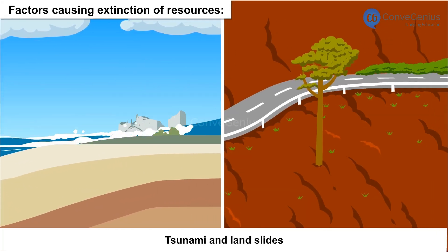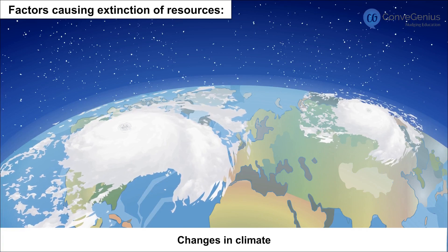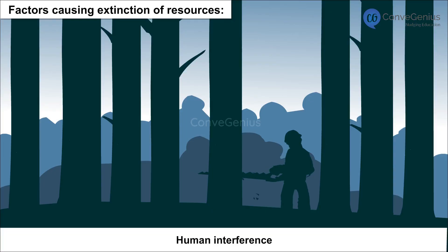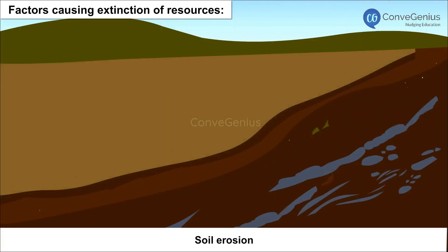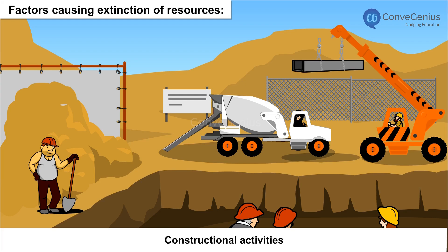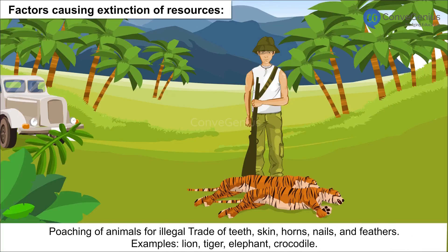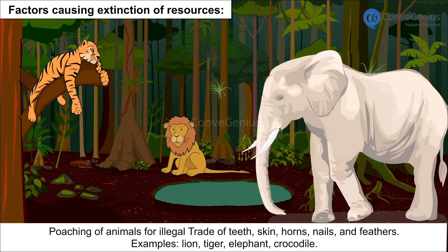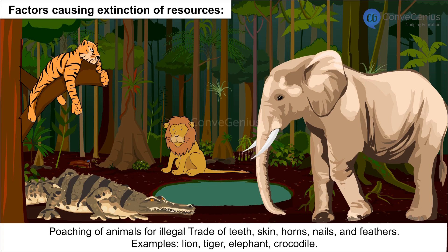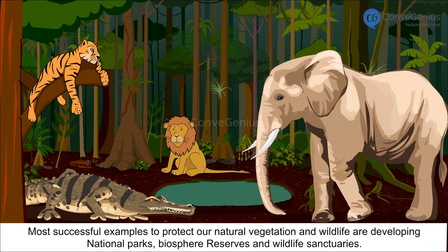Factors Causing Extinction of Resources include forest fires, tsunamis and landslides, changes in climate, human interference, deforestation, soil erosion, constructional activities, and poaching of animals for illegal trade of teeth, skin, horns, nails and feathers. Examples of endangered animals include the lion, tiger, elephant and crocodile.